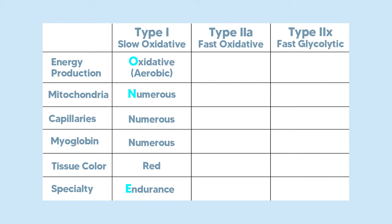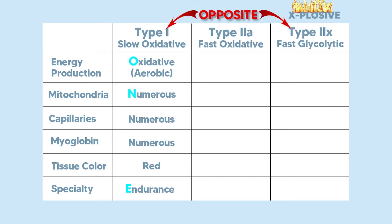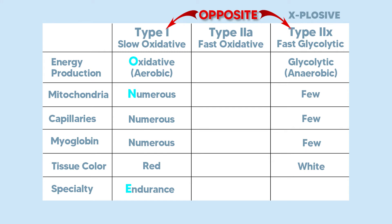Type 2x fibers are basically the exact opposite of Type 1 fibers. They are the strongest and fastest of the three, and you can remember this by thinking of the X in 2x as standing for explosive. Instead of using oxygen, these fibers are anaerobic — they use readily available ATP that's just floating around, not going through the long process of oxidative energy creation. So they don't need a lot of mitochondria, capillaries, or blood, which is why they appear white. This is a short-term power fiber used for explosive activities like sprinting or low-rep power lifting.